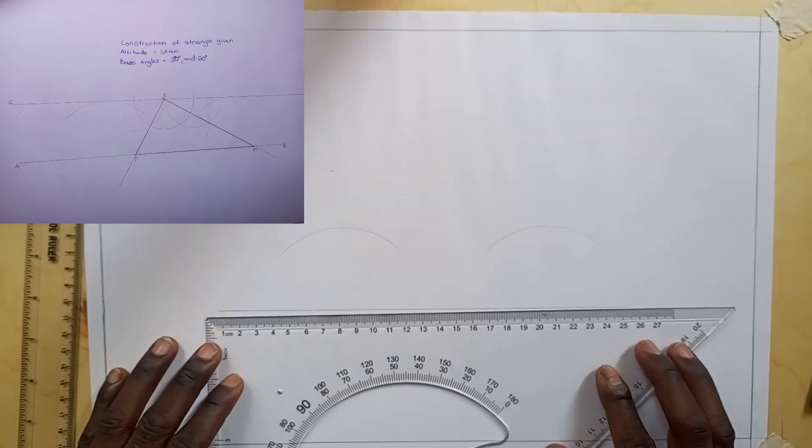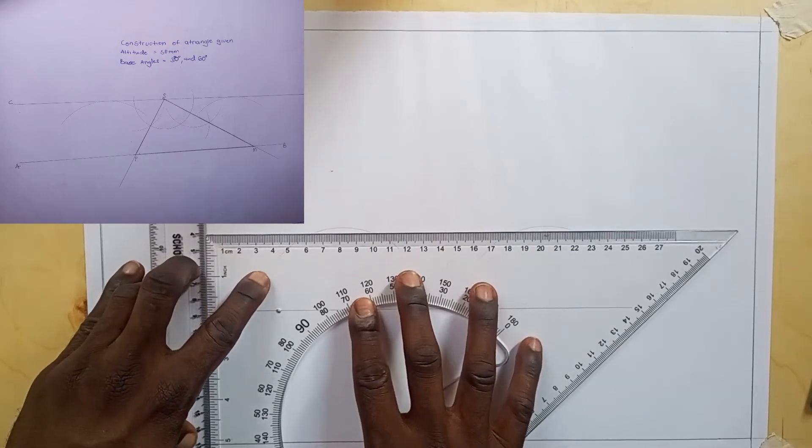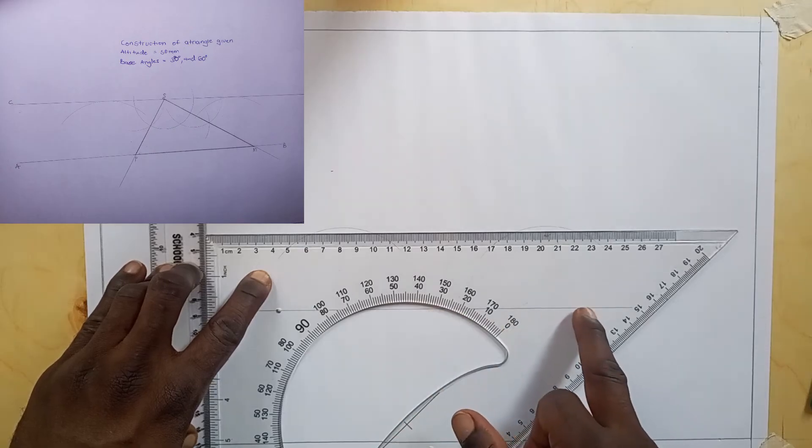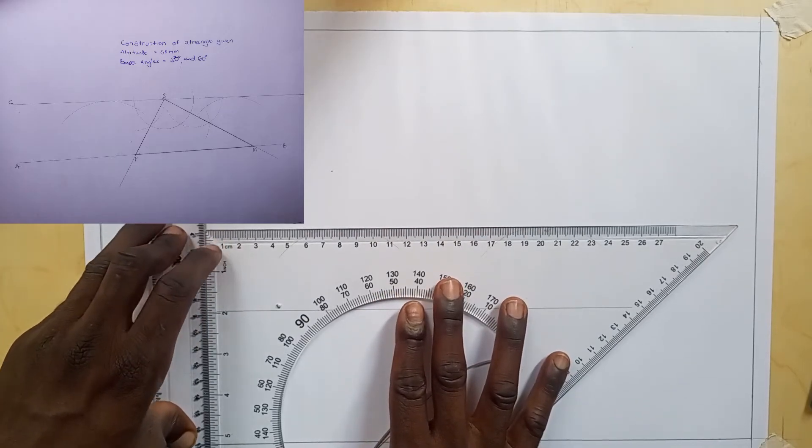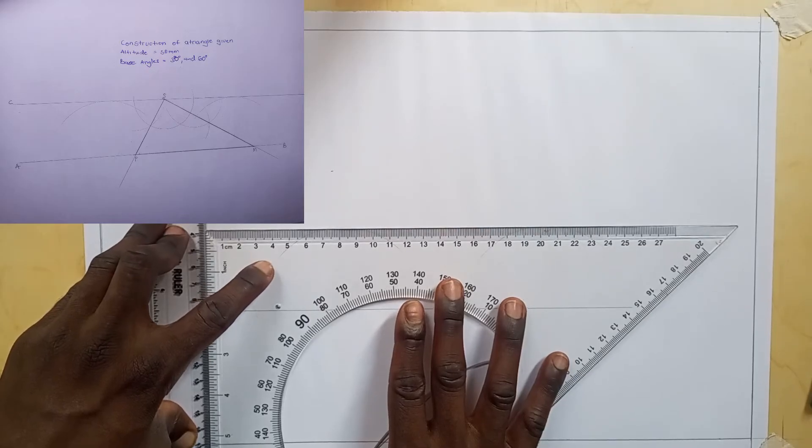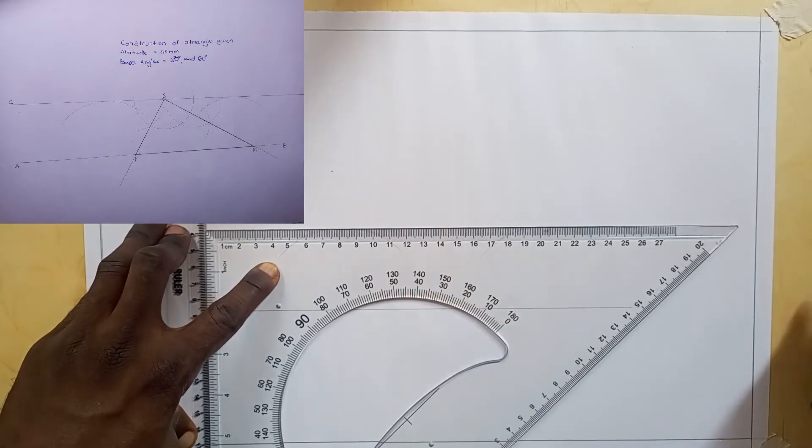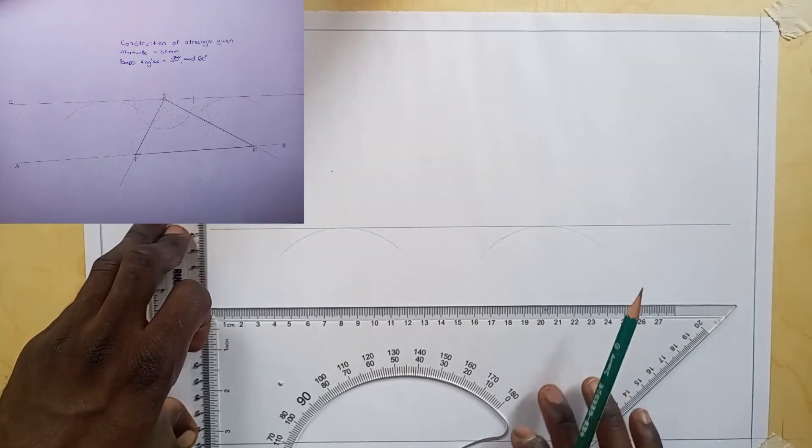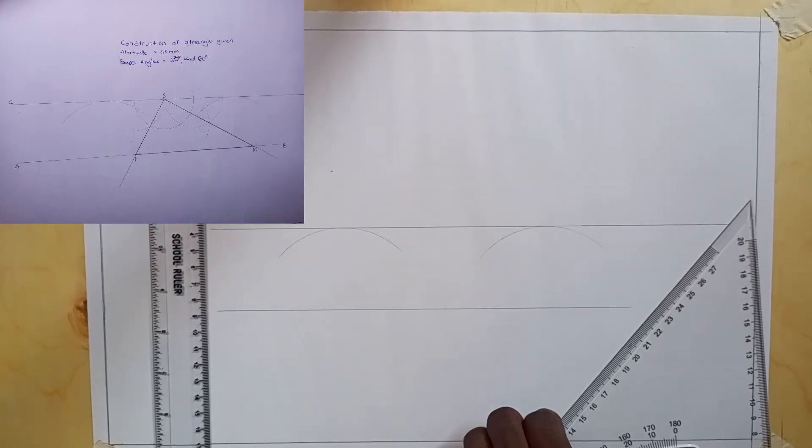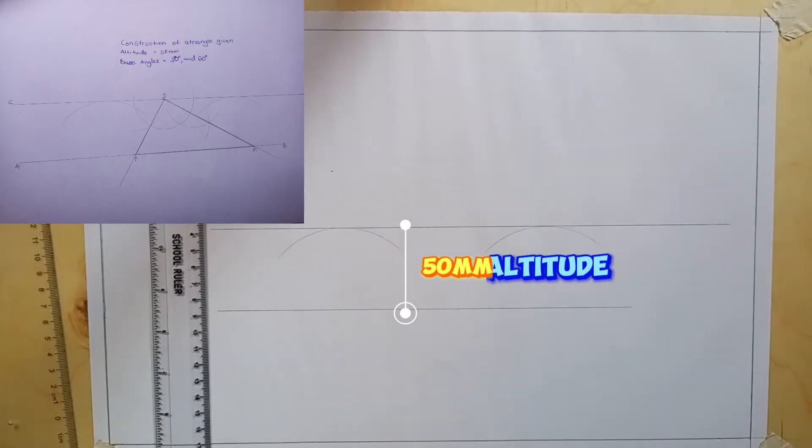Then when you're done, we're going to draw a line parallel to this baseline, but it will be tangential to this arc. Now you'll find that the distance between these two parallel lines is 50 millimeters, which is our altitude.